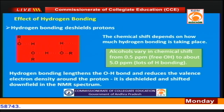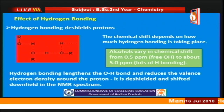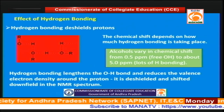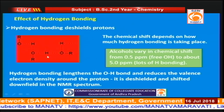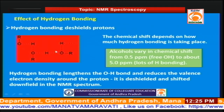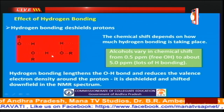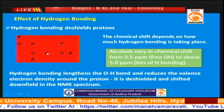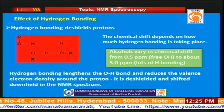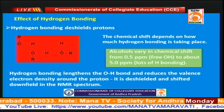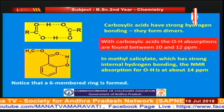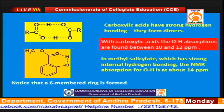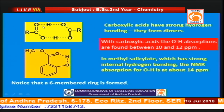Now let us discuss the effect of hydrogen bonding. Whenever hydrogen bonding takes place, the OH bond is lengthened — the bond length between the oxygen atom and hydrogen atom increases. Because of the increase in bond length, the bond is weakened. As the bond weakens, the electron density surrounding the proton decreases. As electron density decreases, it becomes deshielded, so the δ value increases. Dicarboxylic acids are generally in the dimeric or trimeric form, and because of strong hydrogen bonding they are deshielded and have higher δ values. The same is observed in methyl salicylate, where δ values are nearly in the range of 14.